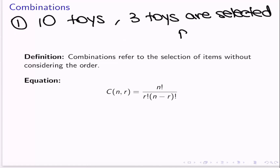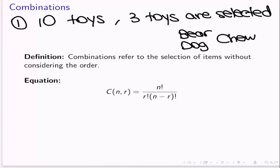Let's say she selects the toy bear, the toy dog, and perhaps a chew toy. If that's the case, does it matter the order she chose them in? What if she chose the chew toy first, then the bear, then the dog? Well, it's still the same three toys coming on the vacation with her, so the order wouldn't matter here. So we should use combinations.